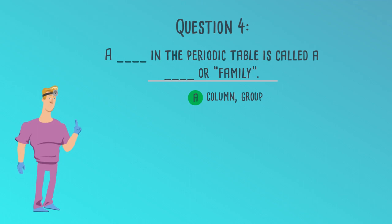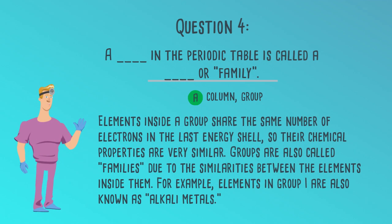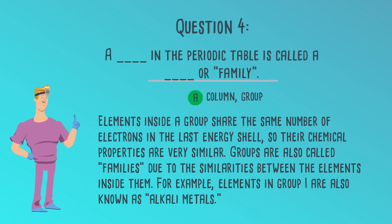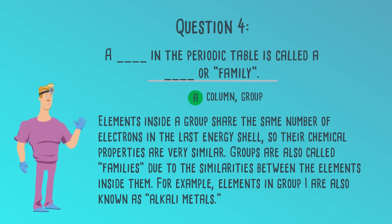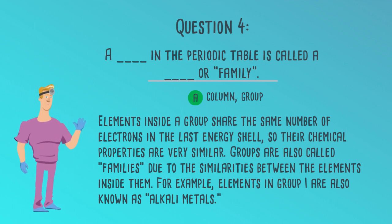The correct answer is A. Column, Group. Elements inside a group share the same number of electrons in the last energy shell, so their chemical properties are very similar. Groups are also called families due to the similarities between the elements inside them. For example, elements in group 1 are also known as alkali metals.